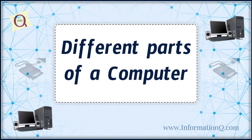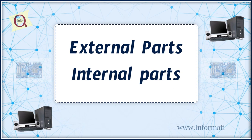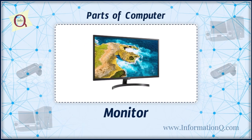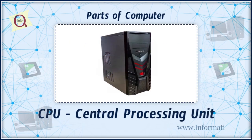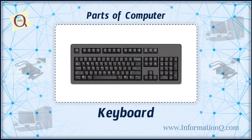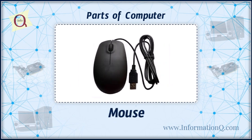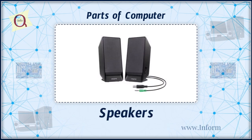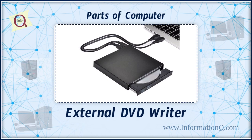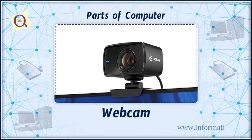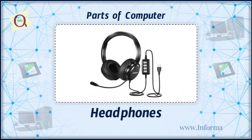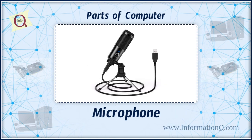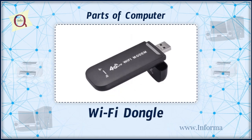Different parts of a computer: external parts and internal parts. External parts are monitor, CPU (control processing unit), keyboard, mouse, printer, speakers, external DVD writer, webcam, headphones, external hard disk, microphone, and Wi-Fi dongle.